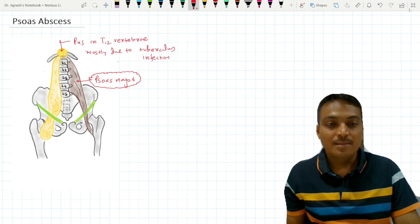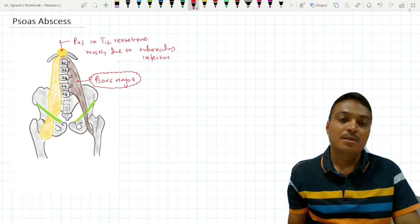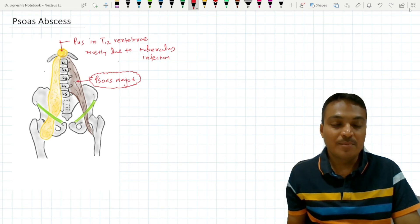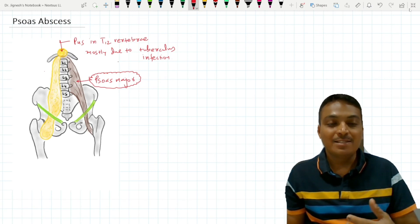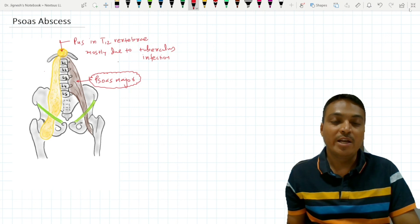This abscess of the psoas major muscle is called the psoas abscess, and the traveling of the psoas abscess up to the femoral triangle may extend through the femoral vessels up to the popliteal fossa if it is not treated timely.